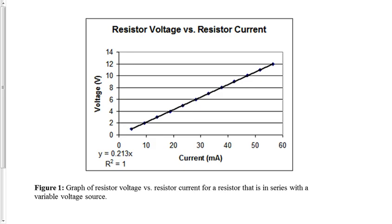If you need to include a graph, make sure all proper labels and units are included in the chart title, along with any relevant statistics. Here we have a line of best fit with an R-squared value of 1 to a couple of significant figures. There is also a figure label below the graph describing what it's about — for example, 'Figure 1: Graph of Resistor Voltage vs. Current' — giving the reader a quick understanding of the graph's purpose.